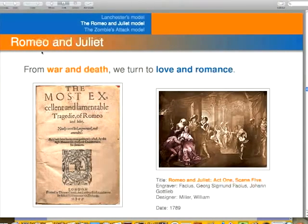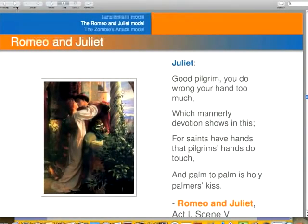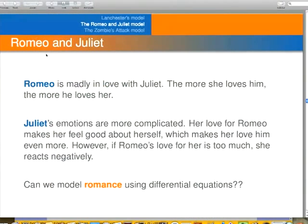Let's move on. There was war. Let's move on to love, Romeo and Juliet. Here's Romeo saying wonderful things to Juliet, and then Juliet is in love with Romeo too. And those are famous lines from the play by Shakespeare.